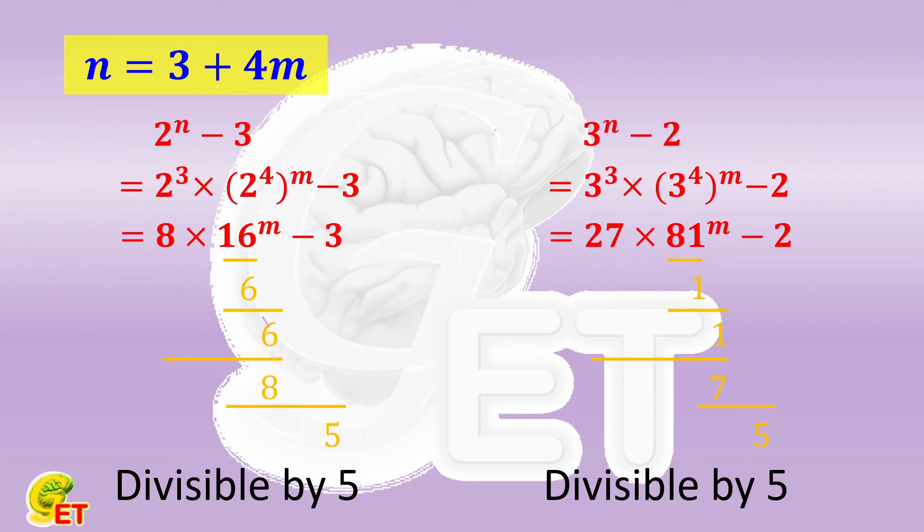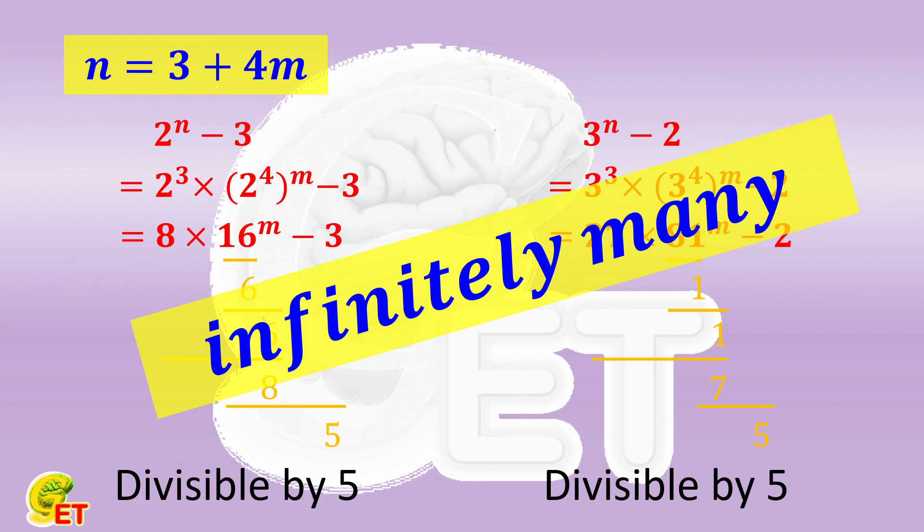So how many n can make these two numbers not co-prime? The answer is infinitely many. Thank you for watching, and see you next time.